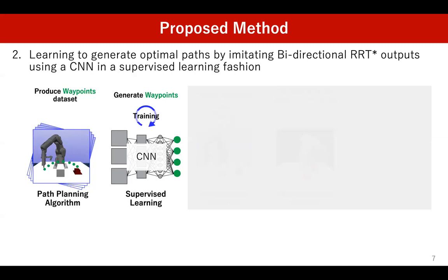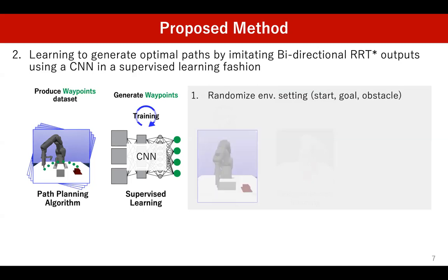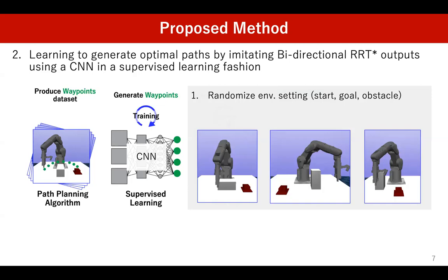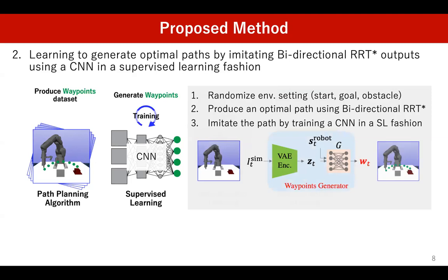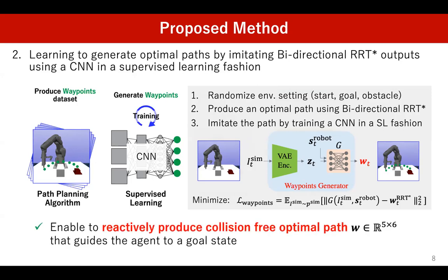Next, we train a CNN model that generates optimal paths in arbitrary environments using supervised learning. We reset environments by randomly changing the positions of the start state, goal state, and obstacles, then produce an optimal path for each using the bidirectional RRT* algorithm. We train a CNN model — the waypoints generator — to imitate these optimal paths in a supervised learning manner. The output is a sequence of five waypoints. This waypoints generator reactively produces collision-free optimal paths that guide the agent to a goal state even if the environment changes during an episode.